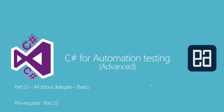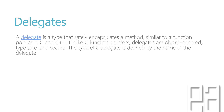Before watching this part, I'd request you to watch part 22 since this is a complete continuation of that part. So let's get started. A delegate is a type that safely encapsulates a method, similar to a function pointer in C and C++. Unlike C function pointers, delegates are object-oriented, type safe, and secure. The type of the delegate is defined by the name of the delegate.